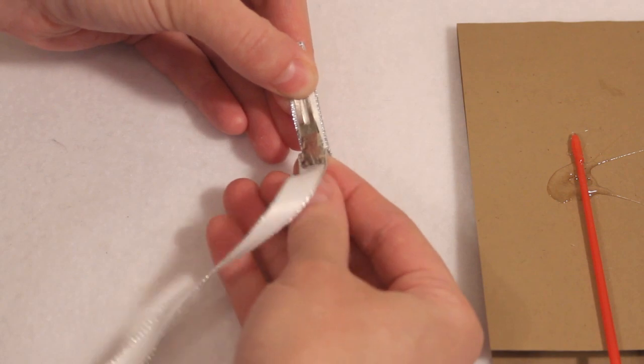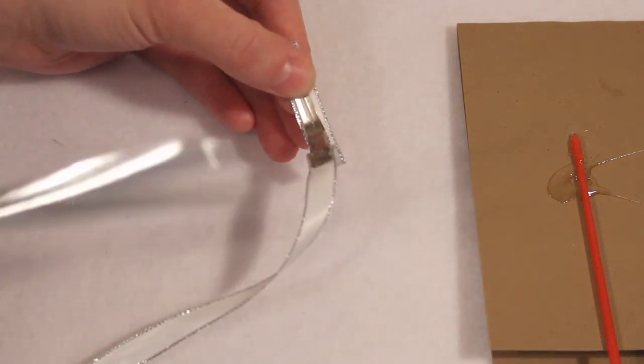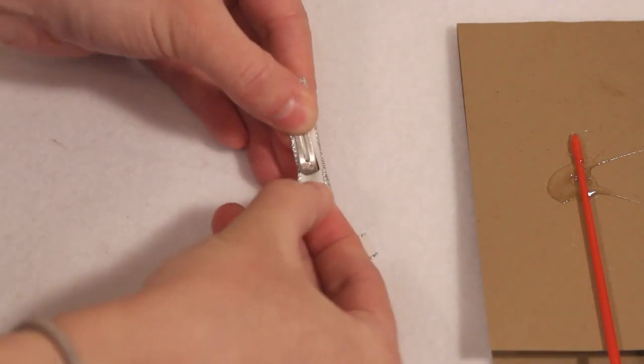Continue along until the ribbon is wrapped around the end. Then trim the excess ribbon and glue it onto the bottom side of the clip.